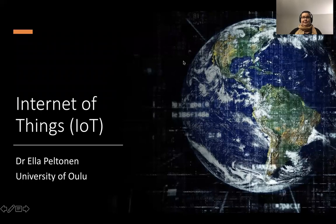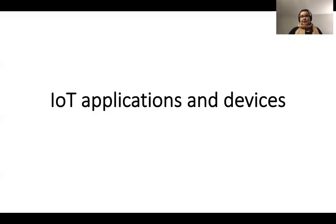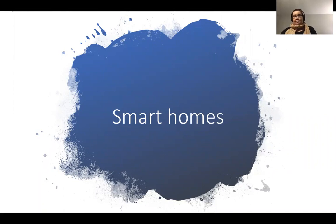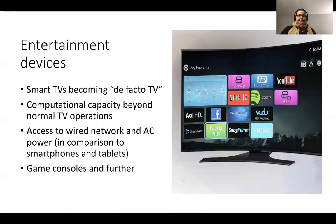Hi everybody, this is the third lecture in the Internet of Things course at the University of Oulu. In this lecture we continue discussing IoT applications and devices, especially focusing on smart spaces — smart public and personal spaces. We'll start with personal spaces, and the most personal space of course is a home.